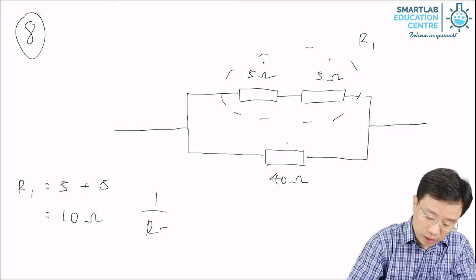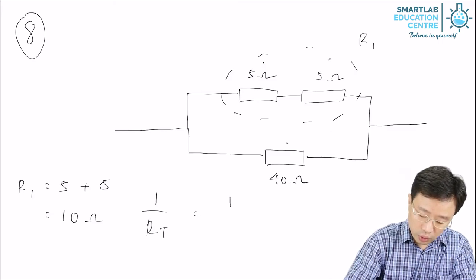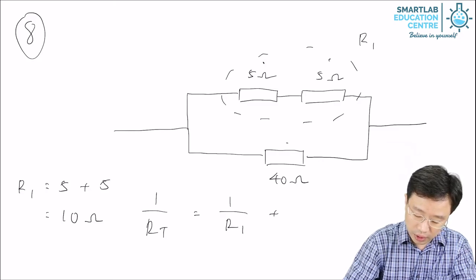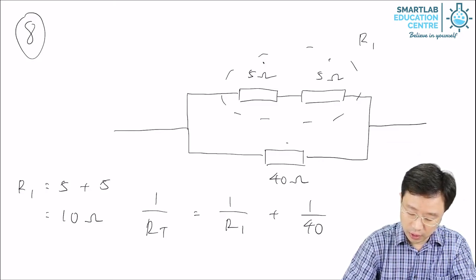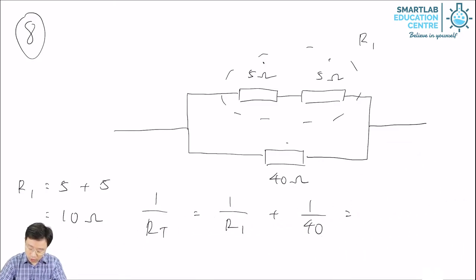1 over RT is equal to 1 over R1 plus 1 over 40, is equal to 1 over 10 plus 1 over 40. And this is equal to 5 over 40, which is equal to 1 over 8 per ohm.